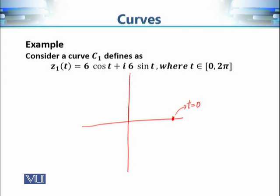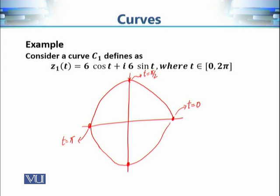At t = π/2, sin(π/2) = 1 and cos(π/2) = 0, so we get 6i. At t = π, cos(π) = −1, so we are at the negative side. At t = 3π/2 we get another point. When we vary t from 0 to 2π and join all these points, we get a circle, traveling in the counter-clockwise direction.